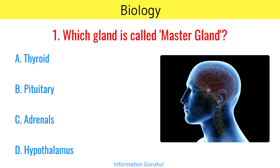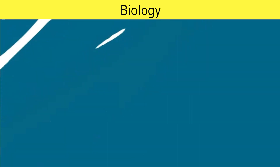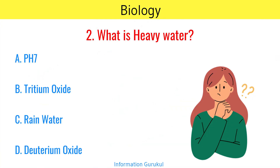Which gland is called Master Gland? Pituitary Gland. What is Heavy Water? Deuterium Oxide.